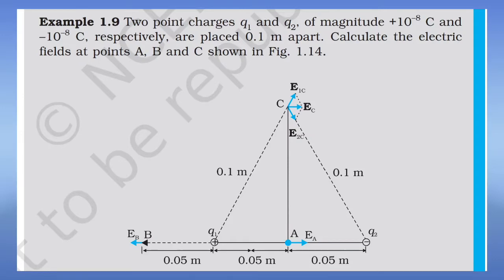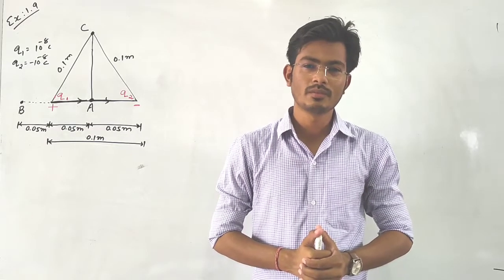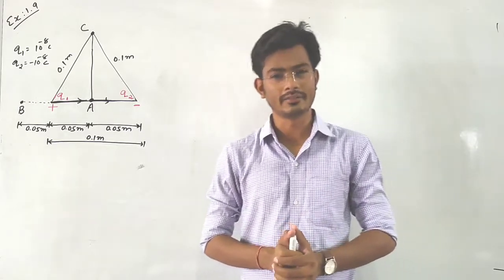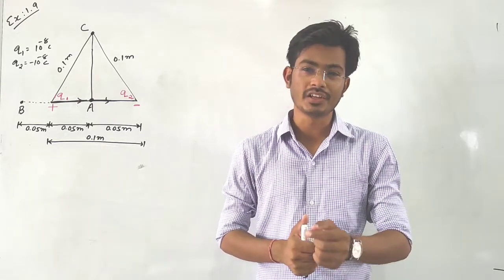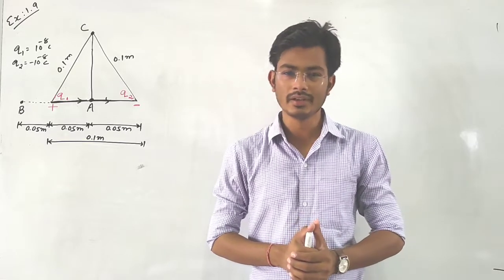Example 1.9. Two point charges q1 and q2 of magnitude plus 10 into 10 raise to minus 8 Coulomb and minus 10 raise to minus 8 Coulomb respectively are placed 0.1 meter apart. Calculate the electric field at points A, B, and C as shown in the figure.